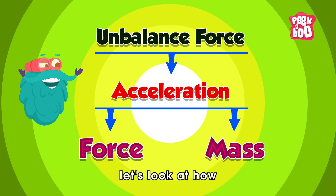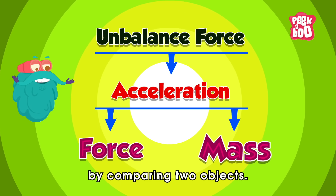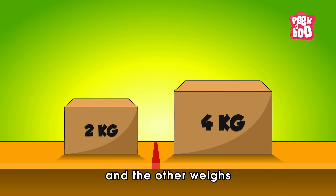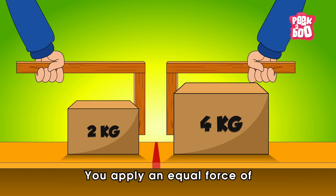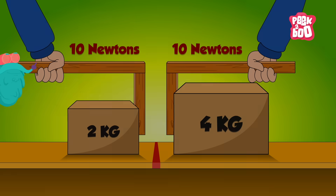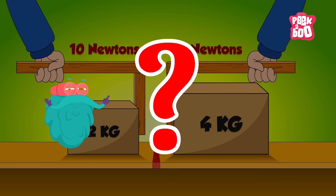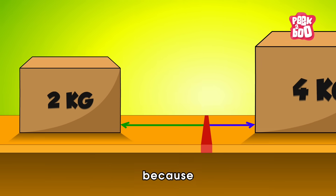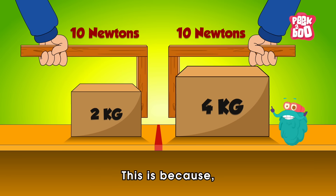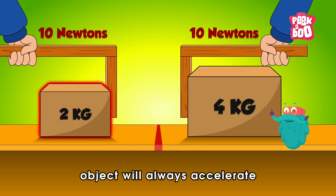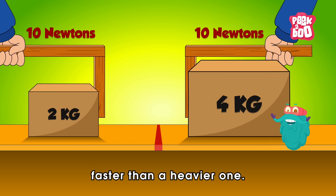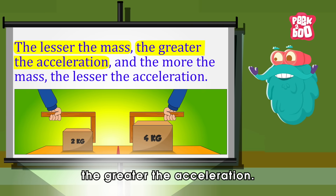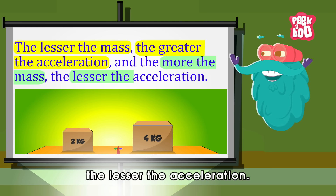Now, let's look at how mass influences acceleration by comparing two objects. Imagine you have two boxes — one weighs two kilograms and the other weighs four kilograms. You apply an equal force of 10 Newtons to each box. Which do you think will accelerate more? Yes, you guessed it right. The two-kilogram box will accelerate more because it has a lesser mass. This is because for the same force, a lighter object will always accelerate faster than a heavier one. So we can conclude that the lesser the mass, the greater the acceleration. And the more the mass, the lesser the acceleration.